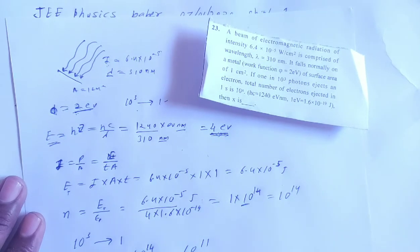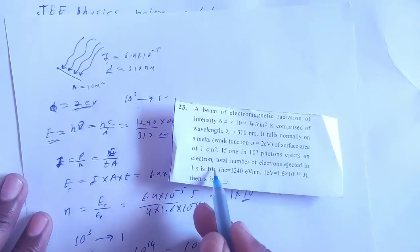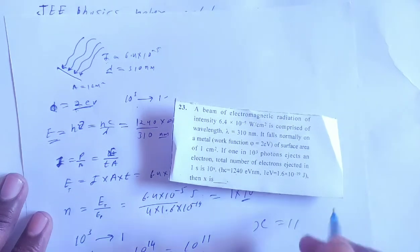10³ photons will eject one electron. So we get 10¹¹ here, so the value of X will be 11. X is equal to 11.